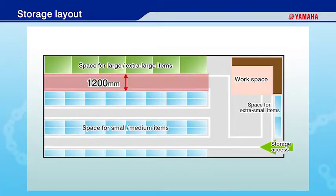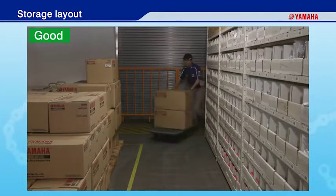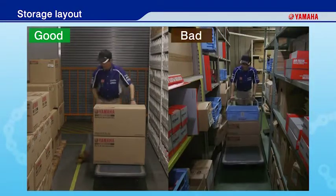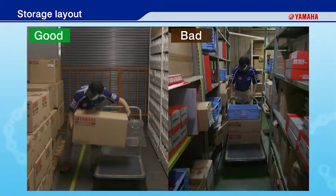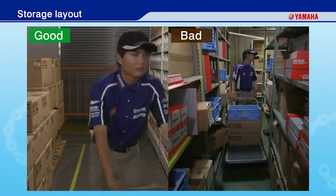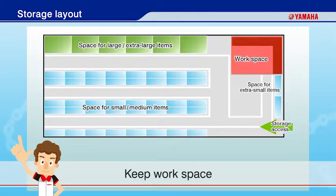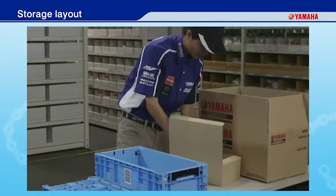Aisles for shelves for small and medium items should be around 900 mm wide. Aisles in front of racks for extra-large and large items should be at least 1,200 mm wide, so that trolleys can be placed. You should also prepare a workspace equal to around 10% of your parts storage that is out of sight of your customers. Place your work desks in this space.